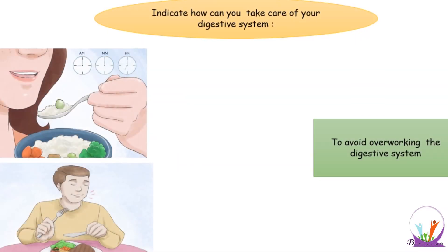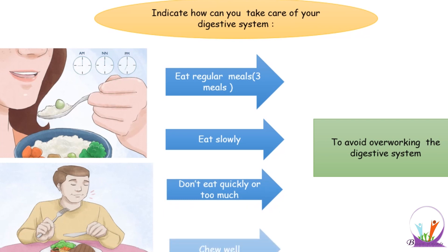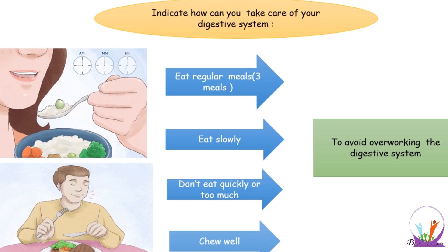How can you take care of your digestive system? You should eat three meals a day and you should eat slowly. Don't eat quickly or too much, and chew well in order to avoid overworking the digestive system.